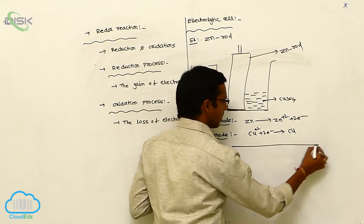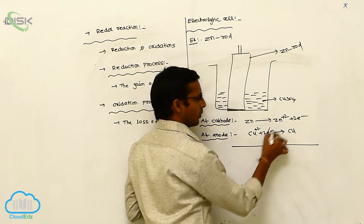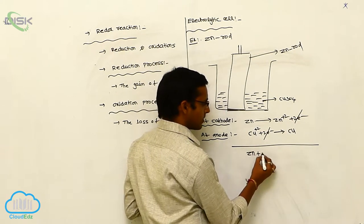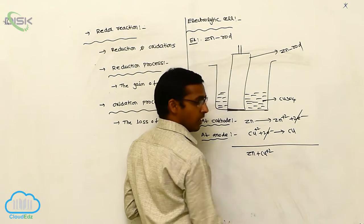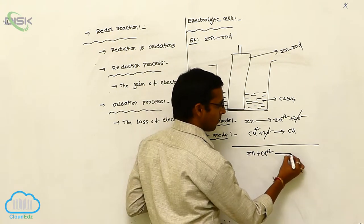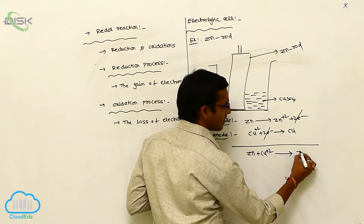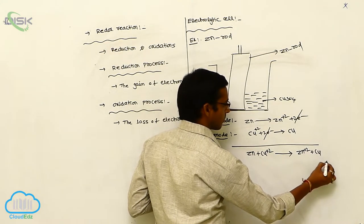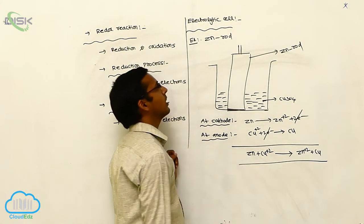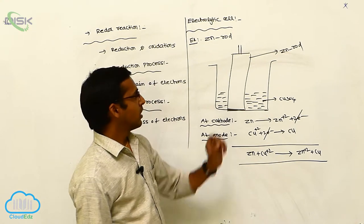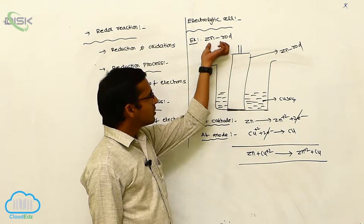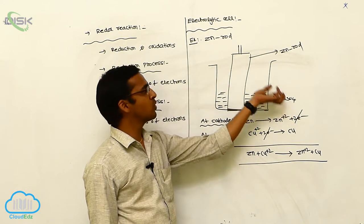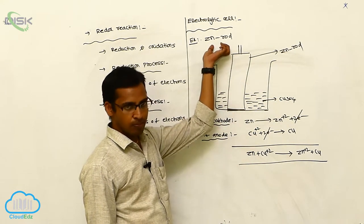Balancing this equation, the two electrons on each side cancel out. We get Zn plus Cu²⁺ on the left-hand side equals Zn²⁺ plus Cu on the right-hand side. In an electrolytic cell, the metallic rod is dipped in one solution — there is no use of a salt bridge.